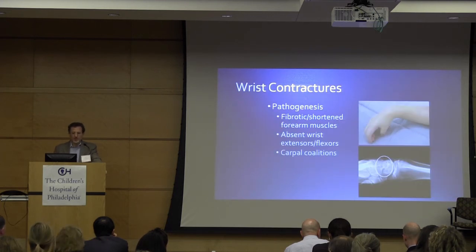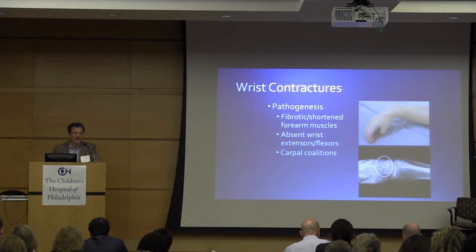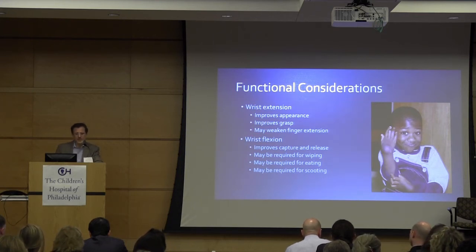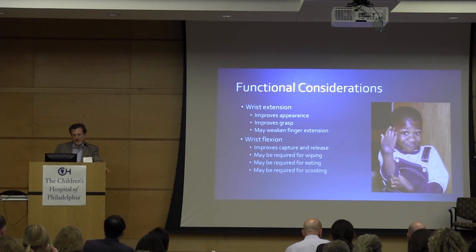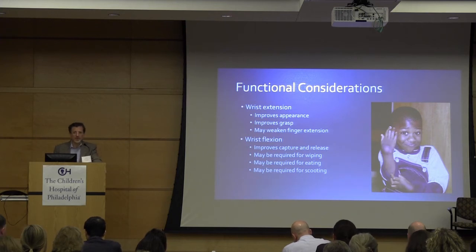Wrist contractures are most commonly in flexion, although some — particularly with distal arthrogryposis — have extension contractures of the wrist. They'll have fibrotic or shortened forearm muscles, particularly with amyoplasia. Absent wrist extensors or flexors depending on the direction of their contracture, and often carpal coalitions as well. Wrist extension tends to improve appearance and grasp, but it may weaken finger extension, which limits capture and release. Wrist flexion may be required for wiping, eating, and scooting — many kids weight-bear on the dorsum of the wrist, and taking that away is a big problem for their mobility.